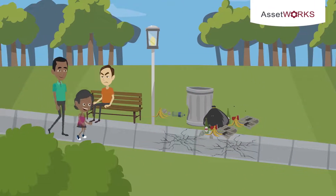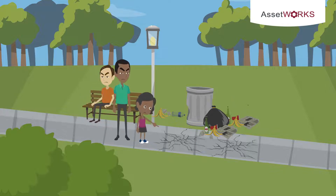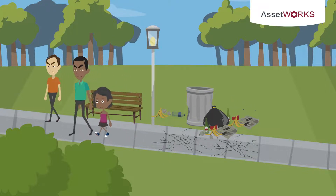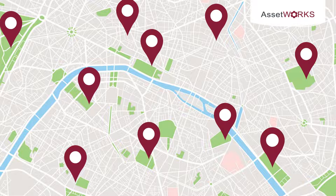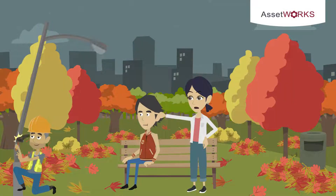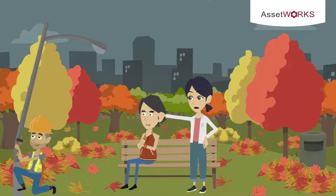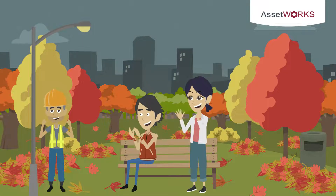But without the correct tools, parks will be unable to continue providing these benefits to communities. Utilizing a geographic information system, also known as GIS, allows facilities to assess conditions so parks remain well maintained and communities continue seeing lasting benefits.